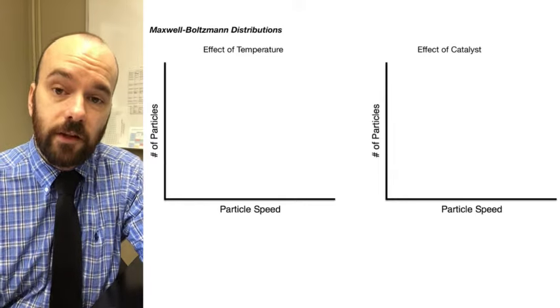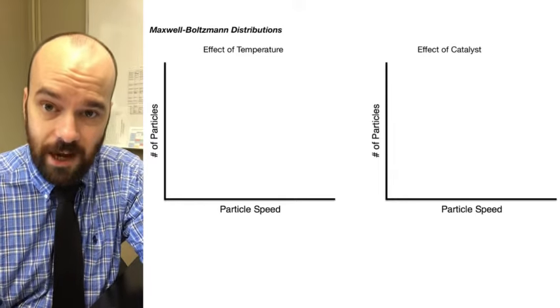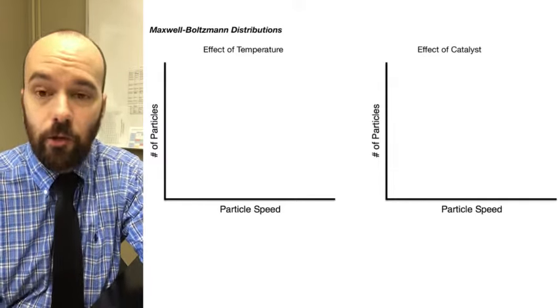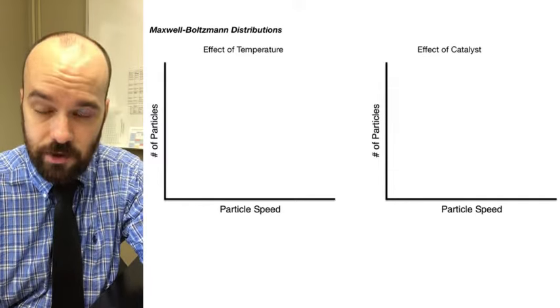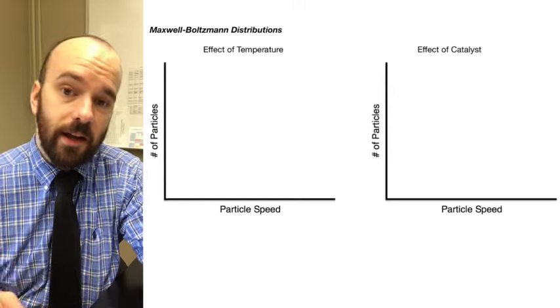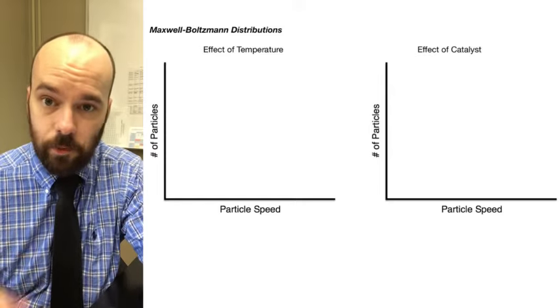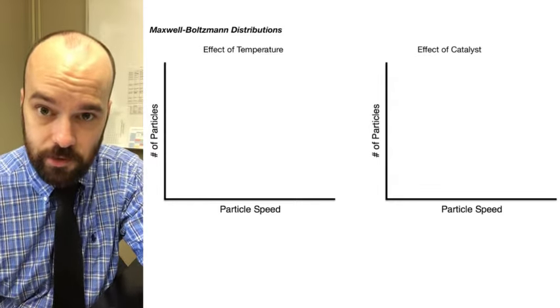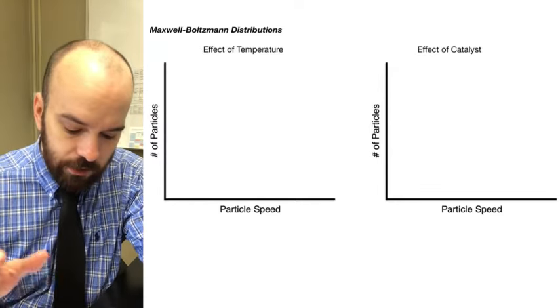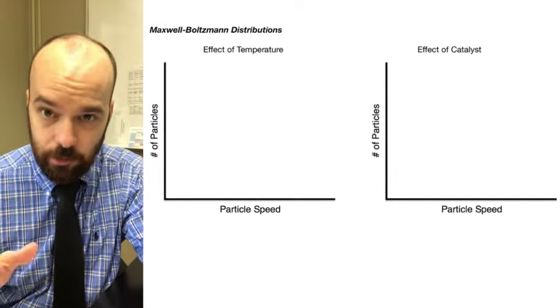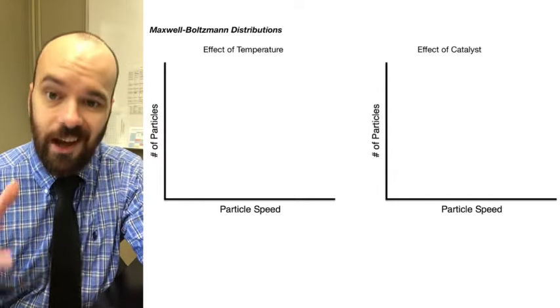In this video we're looking at the effect of temperature and catalysts on the rate of reactions, and we're going to look at this in the context of Maxwell-Boltzmann distributions. We're going to start with the example of temperature first.